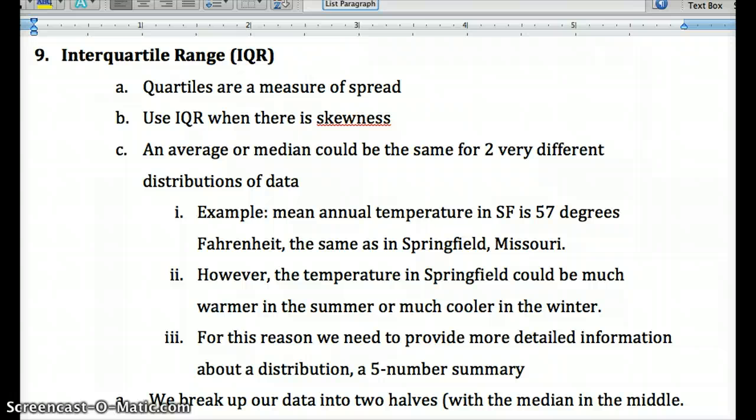A five-number summary, which would be the minimum, then the first quartile, which is the median of the first half of data, then our median, which has half the number smaller, half bigger.